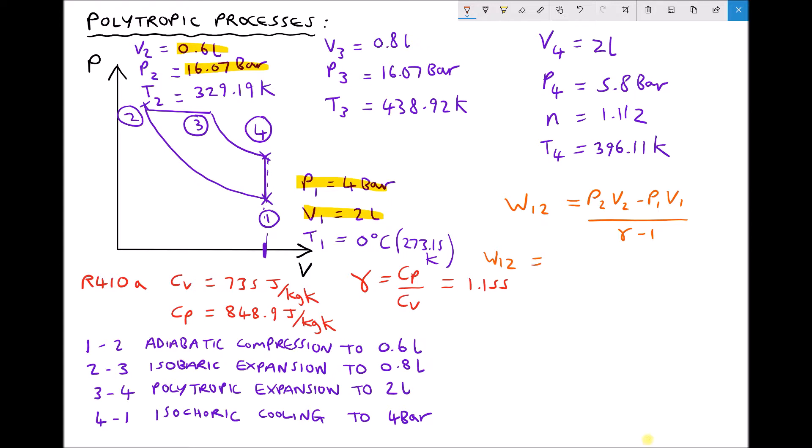Therefore we have the following: W1 to 2 equals P2, well P2 is 16.07 bar but the way that we convert from bar to pascals is by multiplying by 100,000 or times 10 to the 5. We have V2 as 0.6 liters, but the way that we get from liters to meters cubed is by dividing by a thousand, so 0.6 divided by 1000 is 0.0006. From that we need to subtract P1 which is 4 bar or 4 times 10 to the 5 times 2 liters, 2 divided by 1000 is 0.002 meters cubed.